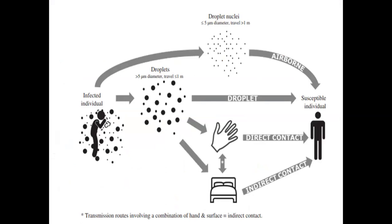There is also something called indirect contact. When you touch an object that has been contaminated and the virus is transferred to your hand, that is indirect contact. Non-living things involved — like the surface of a table, a staircase, or a bed sheet — if you touch them, that is called indirect contact.